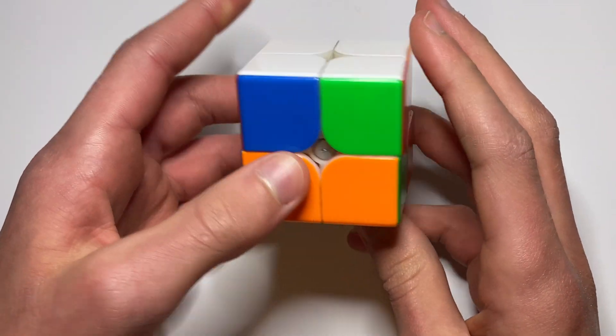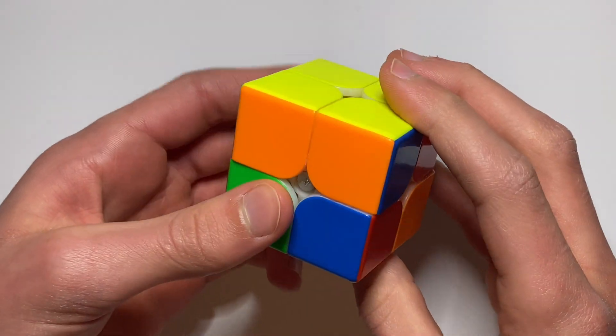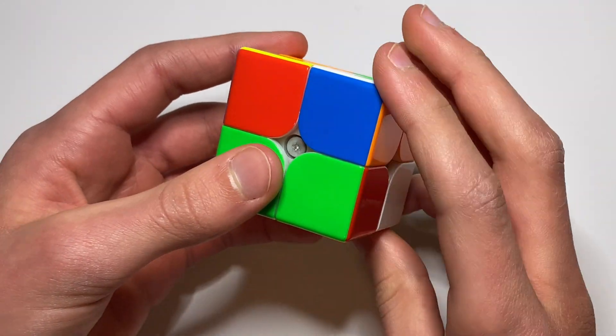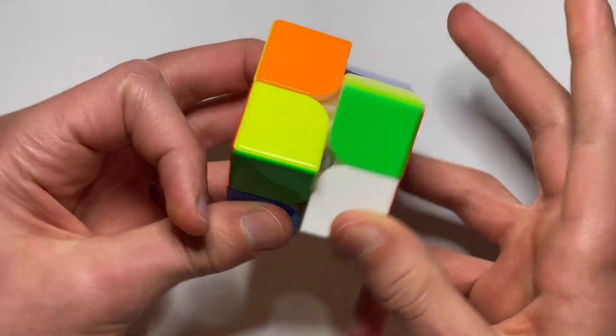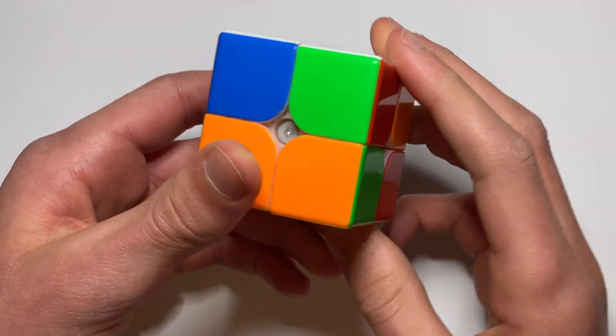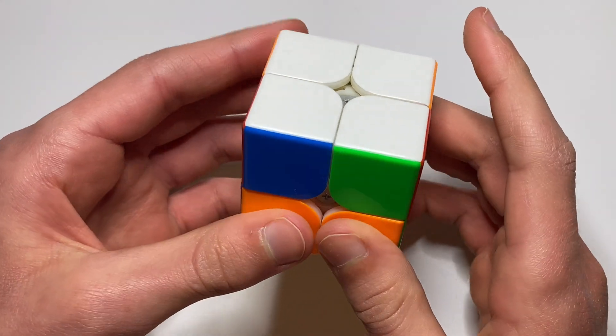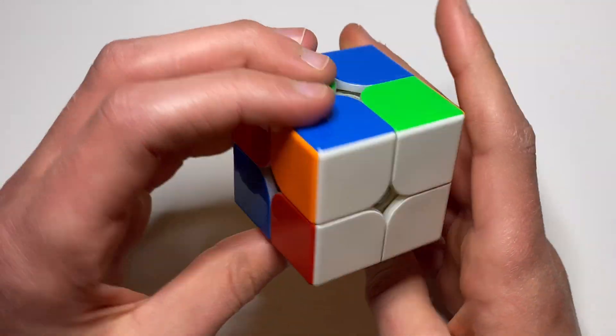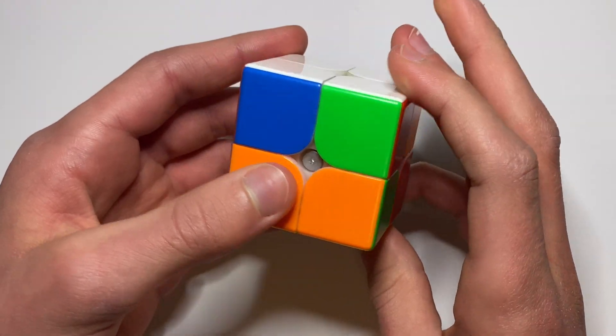The next one is for this case. And for this case normally you rotate, then you do your moves like that. But instead what we're going to do is we are going to do the algorithm from this side, and instead of rotating there is another way to do it.